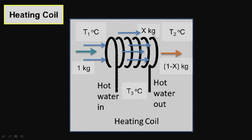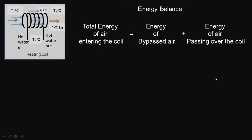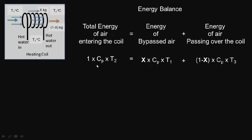Consider x kg of air leaves the coil without affecting temperature, and (1 - x) kg of air comes in contact with the heating coil. For this, we can write an equation of energy flow for the air. The total energy of the air leaving the coil is equal to the energy of bypassed air plus energy of air passing over the coil. Using the MC·ΔT equation, the energy of total air having mass of 1 kg can be written as: 1 × Cp × T2 = x × Cp × T1 + (1 - x) × Cp × T3.